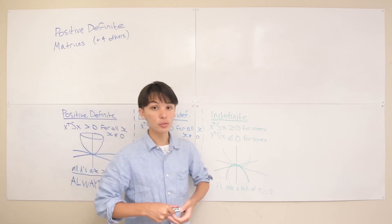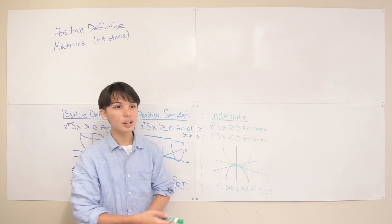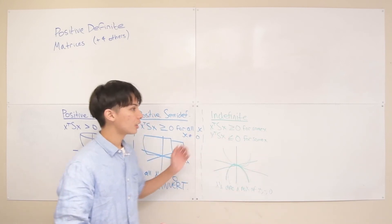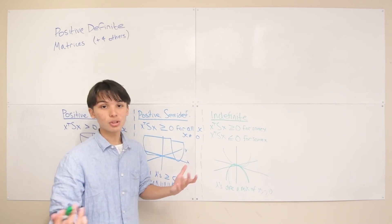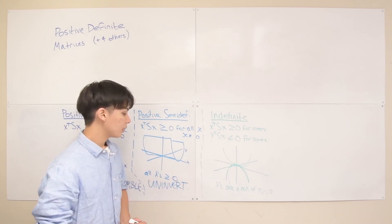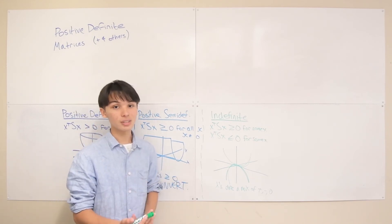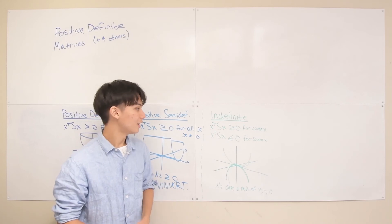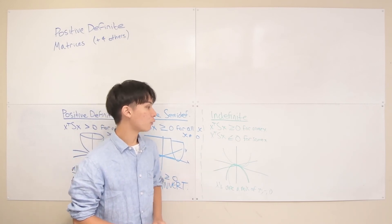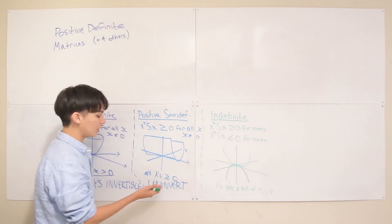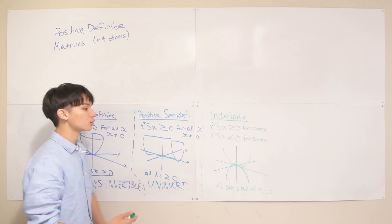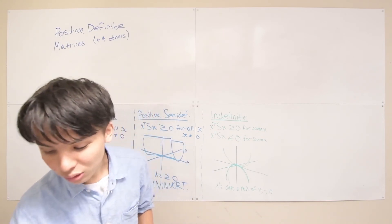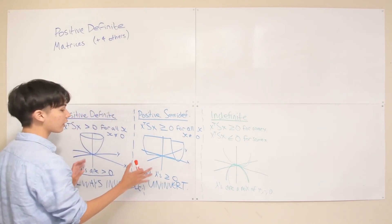The invertibility of an indefinite matrix is uncertain — sometimes invertible, sometimes not. The general rule applies: if any eigenvalue equals zero, the matrix is un-invertible. Indefinite matrices aren't very useful because we can't reliably predict their behavior. With positive semi-definite we at least know some things, but with indefinite we don't know anything predictable. It's good to know what people mean when they say 'indefinite matrix.' We're now moving to the negative matrices, which will go quickly since they mirror what we've already covered, just reversed.